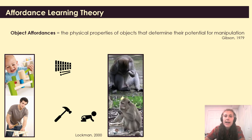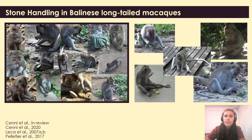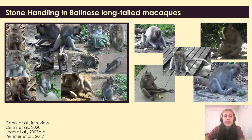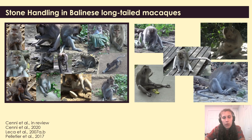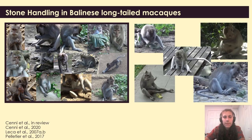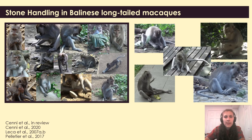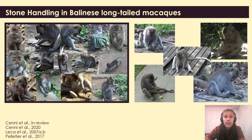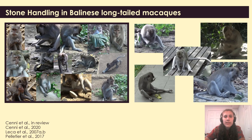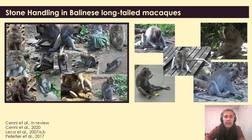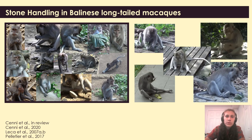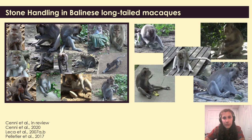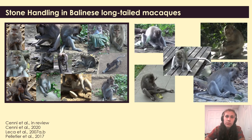My project looks at a specific type of object play expressed by Balinese long-tailed macaques: stone handling. Stone handling is a form of object play that is culturally transmitted and observed in several macaque species. It is a good candidate to explore object affordances in play for several reasons. First, it has a large repertoire of actions that rely on different manual grips to be performed. Second, previous studies indicate that in these populations, two actions may have been co-opted into tool use in a sexual context. And lastly, macaques play with stones of various size, weight, and textures, which provide opportunity for different actions to emerge.